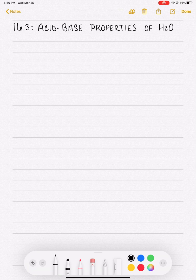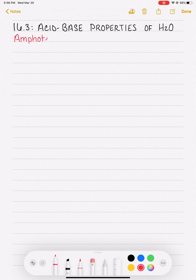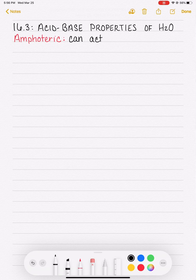Specifically, there's two properties, two acid-base properties of water that we're going to talk about in this section. One, water is amphoteric, which means that it is capable of acting as either an acid or a base.